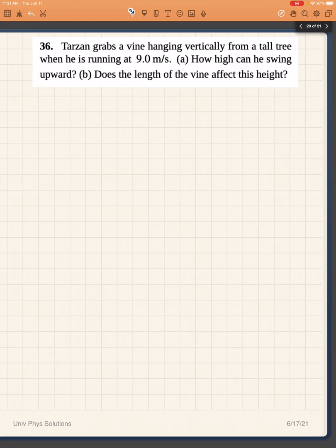This is problem 36 from OpenStax University Physics chapter 8. Tarzan grabs a vine hanging vertically from a tall tree when he is running at 9 meters per second. How high can he swing upward? Does the length of the vine affect this height?